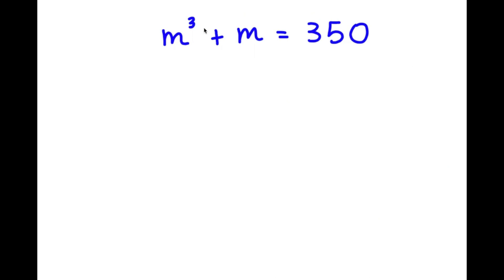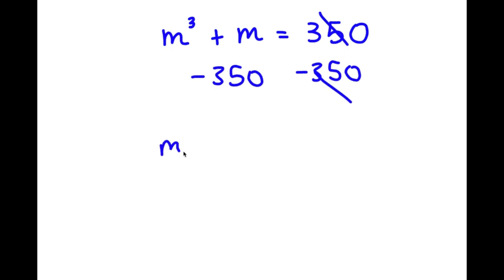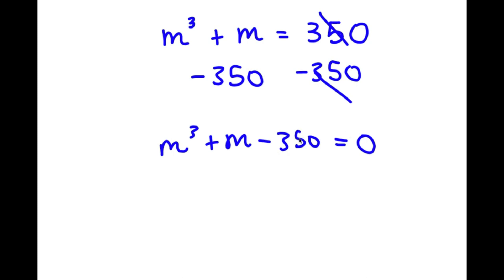In this problem I have m to the power of 3 plus m equals 350. The first thing I'll do is subtract 350 from both sides, so now I have m cubed plus m minus 350 equals 0. I can rewrite 350 as 343 plus 7, so that becomes negative 343 minus 7.